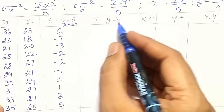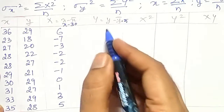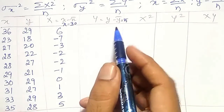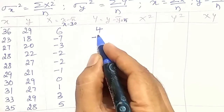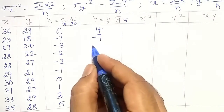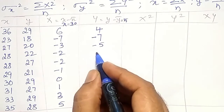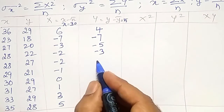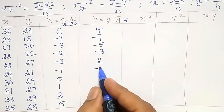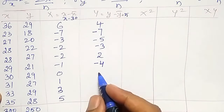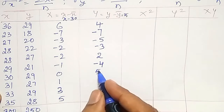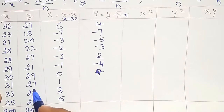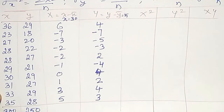Next, Y minus Y-bar — Y-bar value is 25, so Y minus 25. 29 minus 25 is +4, 18 minus 25 is -7, 20 minus 25 is -5, 22 minus 25 is -3, 27 minus 25 is +2, 21 minus 25 is -4, 29 minus 25 is +4, 27 minus 25 is +2, again +4, and +3.